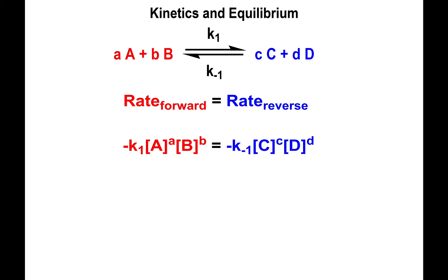In further chemistry courses you'll find the relationship of rate in terms of the concentrations of the species, represented by brackets. The rate equals a negative rate constant multiplied by the concentration of the first reactant raised to its coefficient, multiplied by the concentration of the second reactant raised to its coefficient.